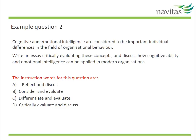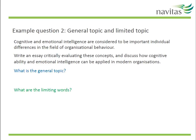Let us consider this second sample question. Which words are the instruction words? Discuss is the task word. Remember that this implies that the writer will look at how cognitive and emotional intelligence can be used, as well as how they can't be used. The general topic is intelligence. The limiting words here could be cognitive and emotional, and the phrase the field of organisational behaviour.